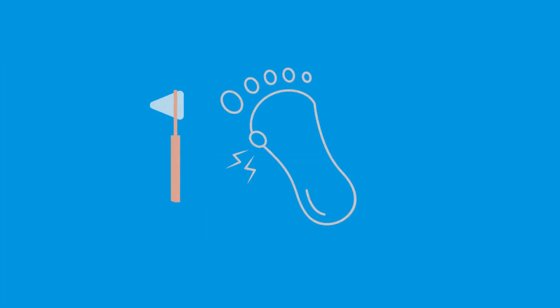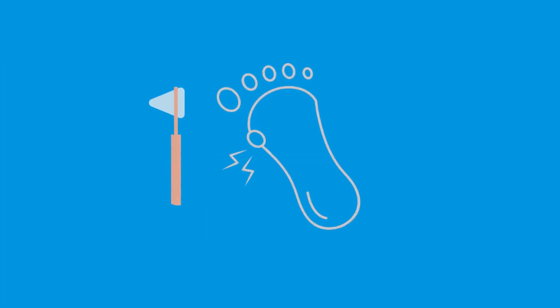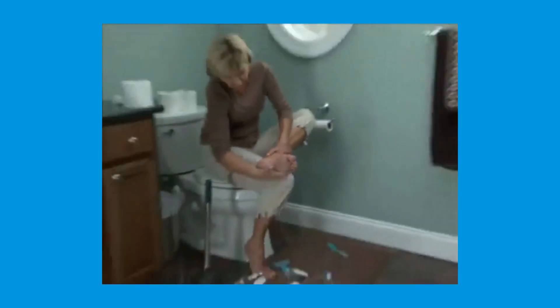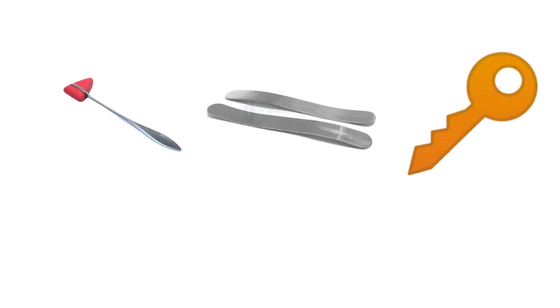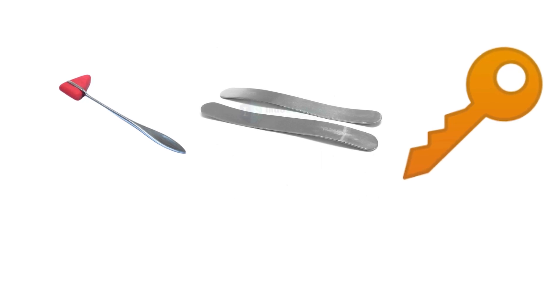The Babinski reflex should be elicited by a dull, blunt instrument that does not cause pain or injury. Sharp objects should be avoided. The dull point of a reflex hammer, a tongue depressor, or the edge of a key is often utilized.